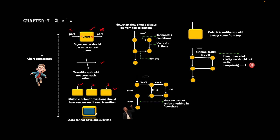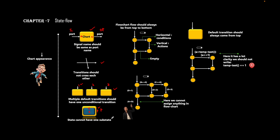Now coming to the next concept: suppose you want to create a sub-chart with a parent state and a child state. Using child and parent states, you cannot have only one child under the parent — there should not be only one state. You should have multiple states inside the parent. That is a good practice to follow.